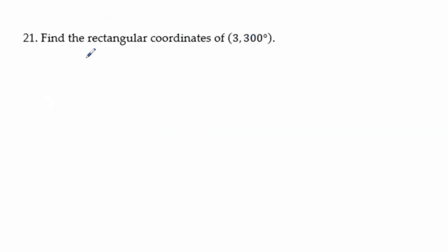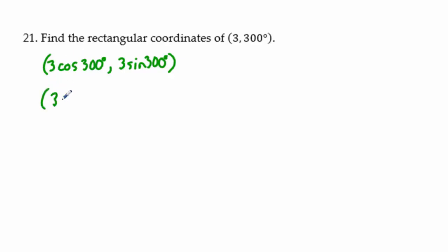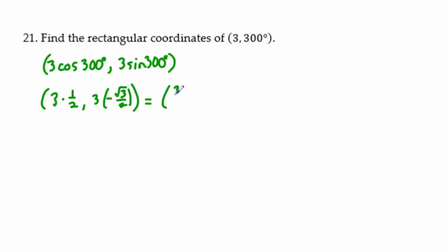Problem 21: find rectangular coordinates of (3, 300°). We compute 3 cos300° and 3 sin300°. 300° is in the fourth quadrant, so cosine = 1/2 (positive) and sine = −√3/2 (negative). Multiplying by 3: x = 3/2 and y = −3√3/2.